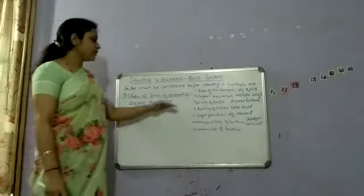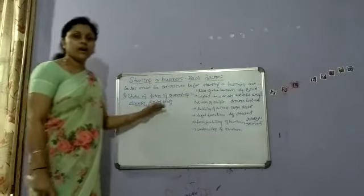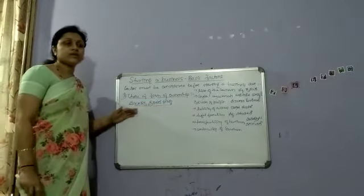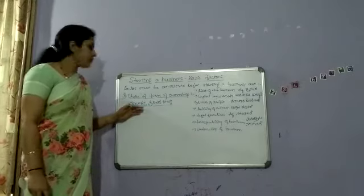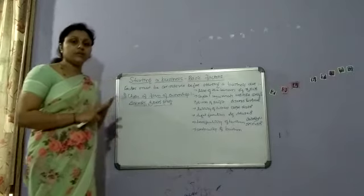Third one is choice of form of ownership. On the basis of ownership, a business organization may take the form of a sole proprietorship, partnership, or a joint-stock company.